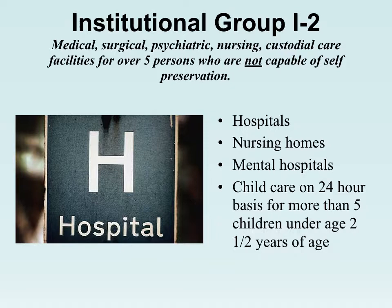A doctor's office is a B, but if they incapacitate people, it becomes an I-2. It can be a gray area determining whether a facility is just a doctor's office or an I-2.